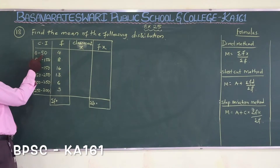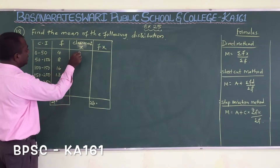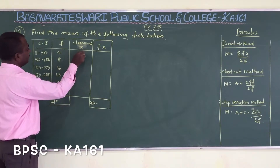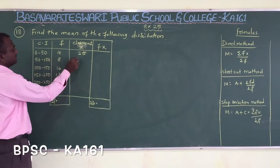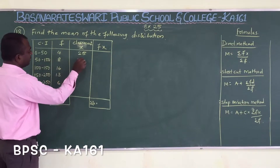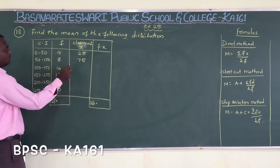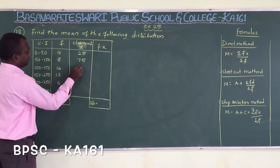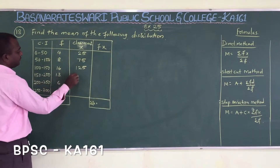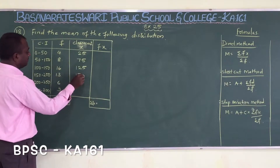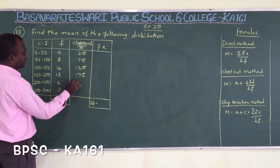So for the first class: 0 + 50 divided by 2 = 25. For 50–100 the midpoint is 75. Next is 125, then 175, and then 225.